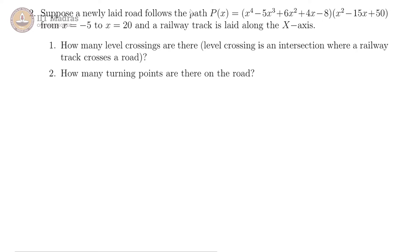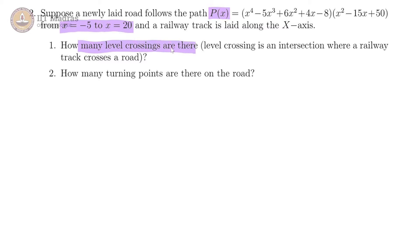In our second question, there is a newly laid road which follows the path of this polynomial about some coordinate system, from x equals minus 5 to x equals 20, and the railway track is laid along the x-axis. So how many level crossings are there?